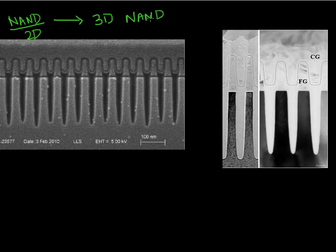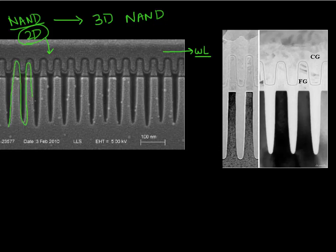If you open up any of your NAND flash memory chips that's in your iPhone or your iPod and drill down and take a TEM of a NAND array, this is how it looks like. This is a TEM along the word line, and it essentially looks like the skyline of Manhattan. It has a lot of these skyscraper cells and they are becoming taller and thinner.